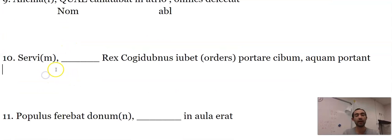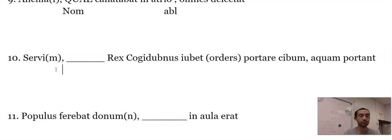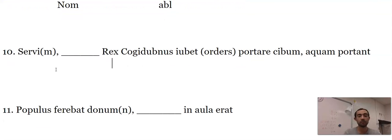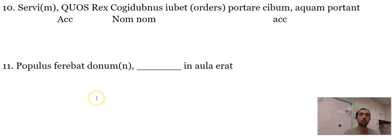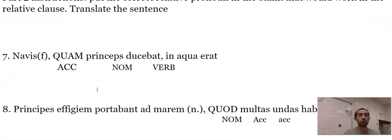Servi is masculine. It's plural. It's got the 'i.' That's how I know. Rex Cogidubnus is our nominative subject. Orders to carry food. And he's going to order the slaves to carry food. This would actually be another accusative because that's the direct object of orders. Iubet. Quos. Whom King Cogidubnus was ordering to carry food.